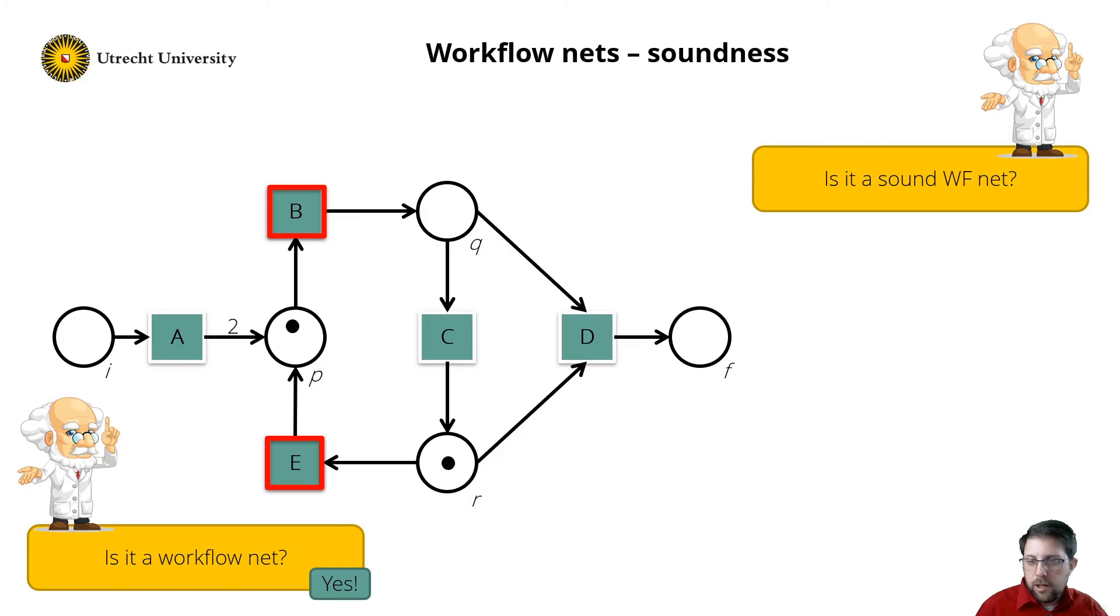Firing transition e would lead to a marking in which there are two tokens in place p, which I already had. So I fire transition b, consuming the token from place p, producing one in place q. So I have now tokens in place q and r. That means that transitions c, d and e are all enabled. So I can fire transition d and it results in one token in place f. So it is sound.